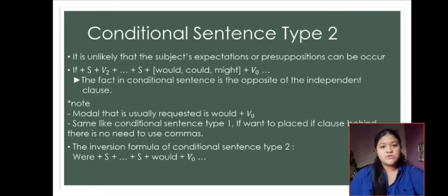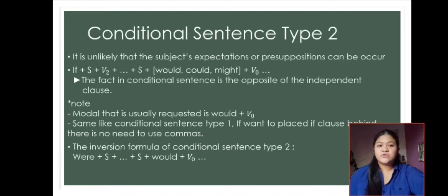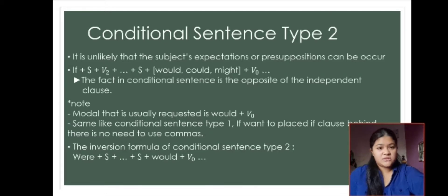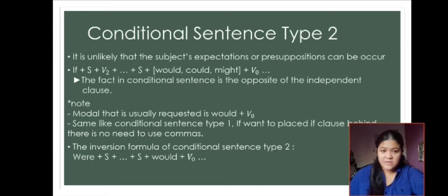I have two notes for type 2. First, the modal usually used is 'would + verb 0.' Second, same as type 1, if you want to place the if clause behind, there is no need to use a comma. Also like type 1, conditional sentence type 2 has an inversion, with the formula: were + subject + complement + subject + would/could + verb 0.